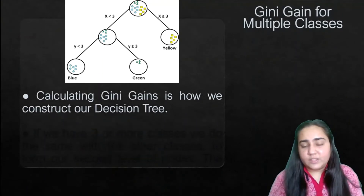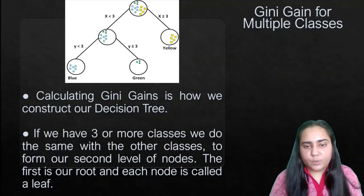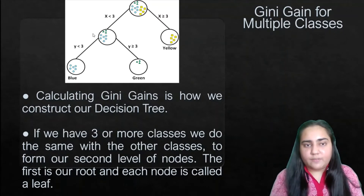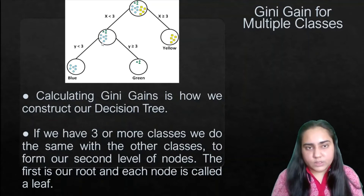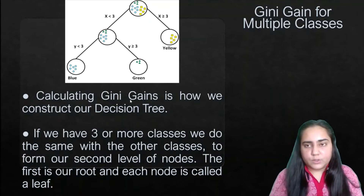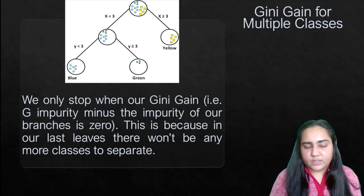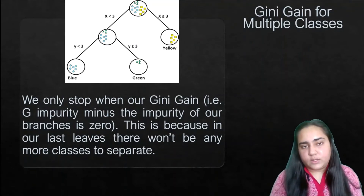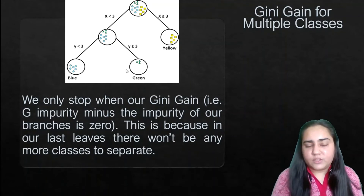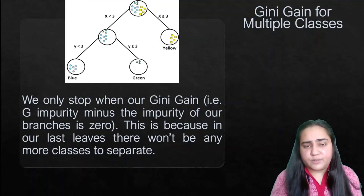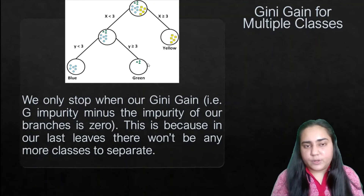Calculating Gini gains is how we construct our decision tree. If we have three or more classes we do the same thing with the other classes to form the second level of nodes — we just apply the same formula to the next node for those values, and keep going. We only stop when the Gini gain — G_impurity minus the impurity of the branches — is 0. At the leaf nodes there are no more classes to separate, so all data points belong to the same class.